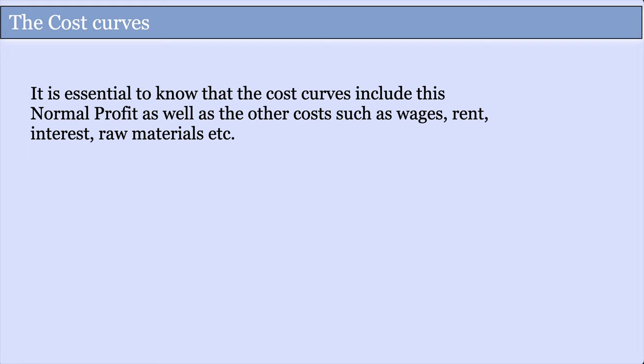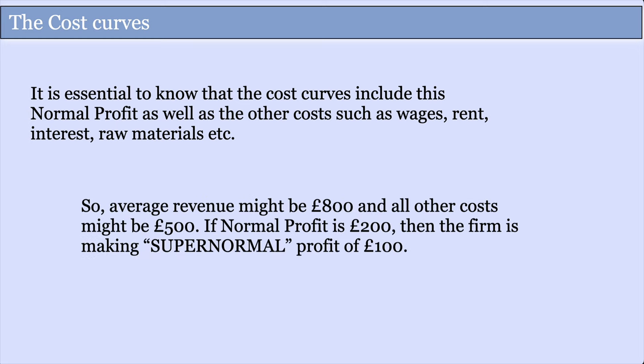When building up the cost and revenue curves for firms, it's essential to know that the cost curves include this element of normal profit as well as all other costs — wages, rent, materials, interest, etc. For example, if the average revenue of a firm is £800 and all other costs are £500, an accountant would say you're making £300 profit. But as an economist, if you could be earning £200 elsewhere, that's your normal profit and it should be added into costs. So you're only making £100 of supernormal profit above normal.